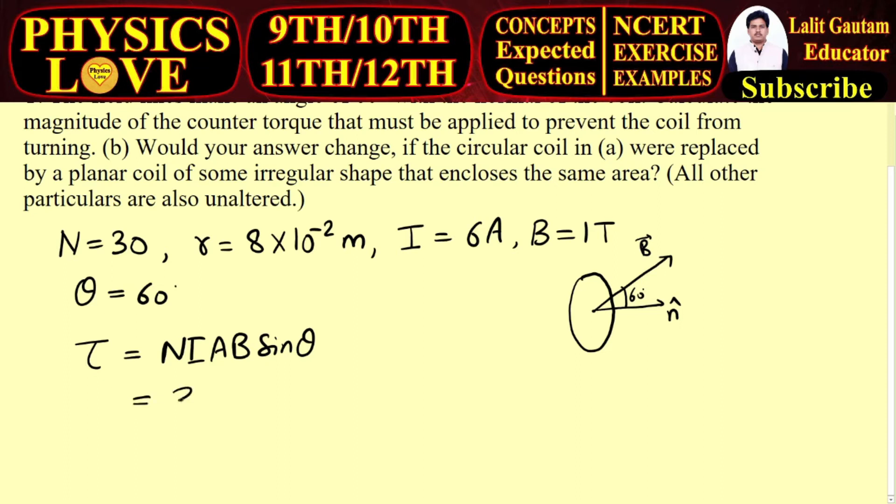The number of turns are 30, the value of current is 6 amperes. Area is πr², that is 3.14. Here I put the value of π as 3.14, and the radius is 8 × 10^-2 squared. Sin θ is sin 60 degrees.